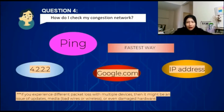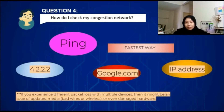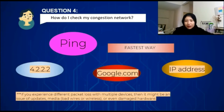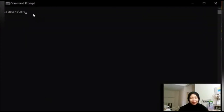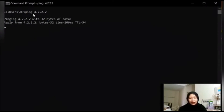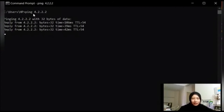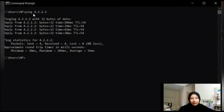Question four: how do I check my network congestion? By pinging. Ping is the fastest way. You can ping 4.2.2.2, or you can ping google.com, or you can ping an IP address. Let me show you how. Let's ping 4.2.2.2 for connectivity to see if there is any packet loss. As you can see, there is no packet loss. So, what if you ping google.com? There is also no packet loss here.